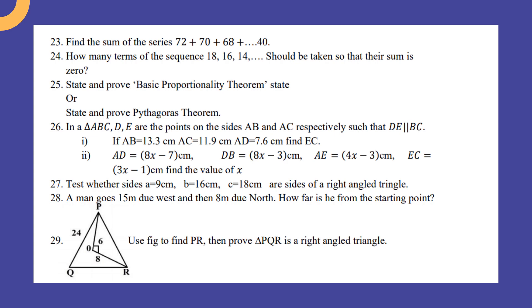Find the sum of the series 72 + 70 + 68 + ... + 40. How many terms of the sequence 18, 16, 13 should be taken so that their sum is 0?